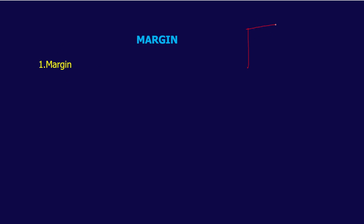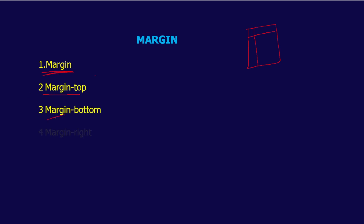Margins are certain boundaries that can be set whenever you are writing content in your pages, doing animation, or creating a design. Margins can be done in certain ways: first you have the margin property, second you have margin-top, margin-bottom, margin-right, and margin-left.